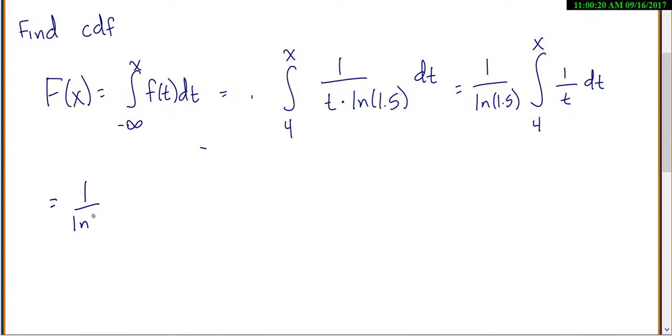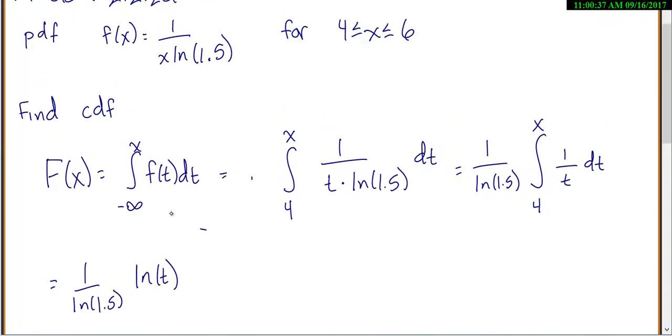And then you might remember from your calculus classes that if you want to integrate 1 over x or 1 over t, that's just going to be the natural log. So it's the natural log of t. Now, usually we would actually put an absolute value here, but it doesn't really matter because we only care about x's from 4 to 6, which are always positive.